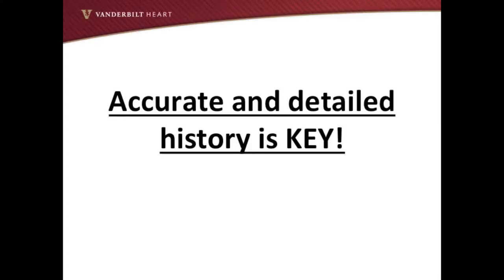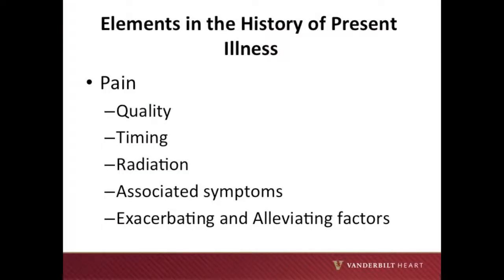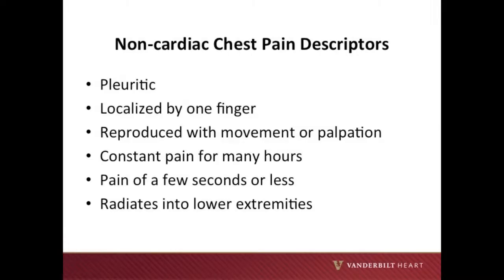Now we will review the important elements of the history of present illness. It should be noted that an accurate and detailed history is key in appropriately assessing a patient with suspected ACS. When gathering the history from the patient, focus on the description of the pain — gather information about the quality of the pain, the timing and radiation, as well as associated symptoms and exacerbating or alleviating factors. Classic anginal pain will be described as squeezing or pressing in nature in the central chest that radiates to the left arm or jaw. It is typically lasting on the order of minutes, is associated with shortness of breath, diaphoresis, and is exacerbated by activity and alleviated with rest. It is also important to ask the patient about specific non-cardiac chest pain descriptors.